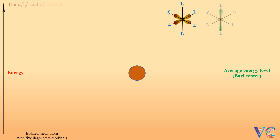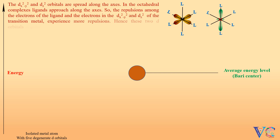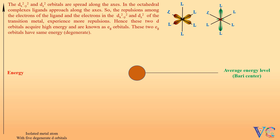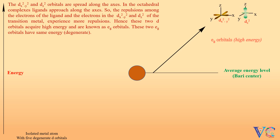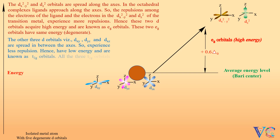The dx²-y² and dz² orbitals are spread along the axes. In the octahedral complexes, ligands approach the metal along the axes. So the repulsions among the electrons of the ligand and the electrons in the dx²-y² and dz² orbitals of the transition metal experience more repulsions. Hence, these two d orbitals acquire high energy. These are eg orbitals and have the same energy. The other three d orbitals — dxy, dyz, and dzx — are spread in between the axes, so they experience less repulsions, hence have low energy. These are t2g orbitals. All three t2g orbitals also have the same energy.